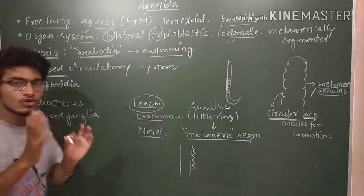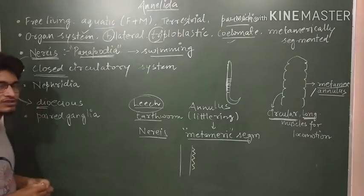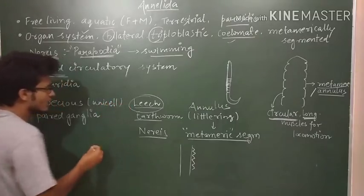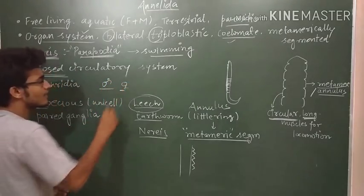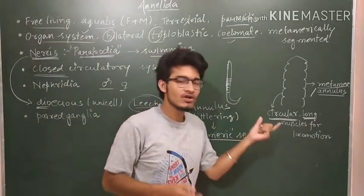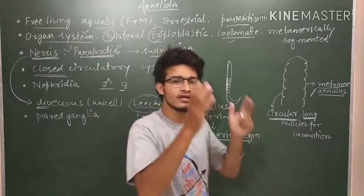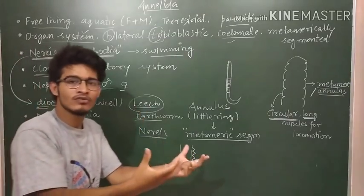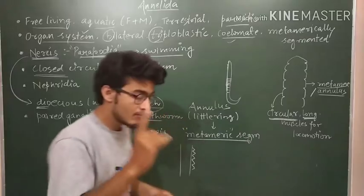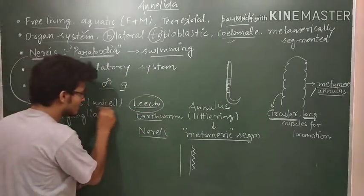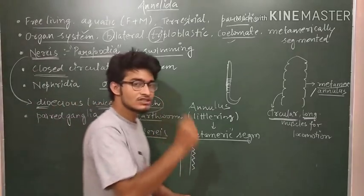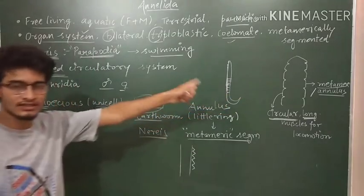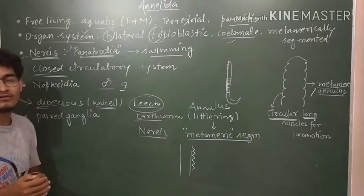After that, the circulatory system is closed. Let's talk about another feature of Nereis - that it is dioecious. Dioecious means unisexual. It means that the male and female are separate. Male Nereis is separate, female Nereis is separate. Because when we talk about earthworm, it contains male and female reproductive organs in the same individual. There is no distinction like female earthworm and male earthworm. Both of these sex organs are present in the same individual.